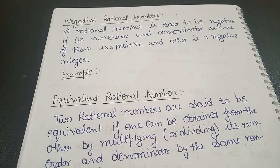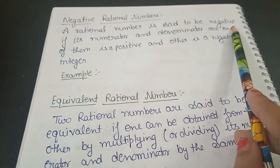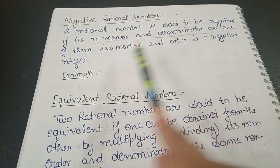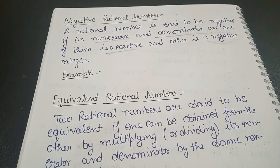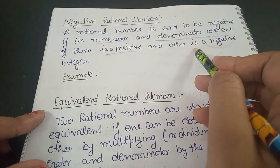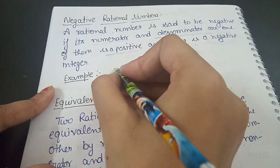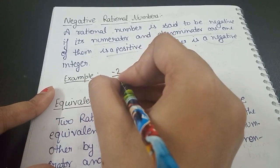Now let's talk about negative rational numbers. A rational number is said to be negative if one of its values — numerator or denominator — is positive and the other is negative. For example, (-2)/5 is a negative rational number.